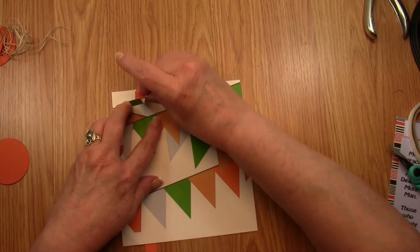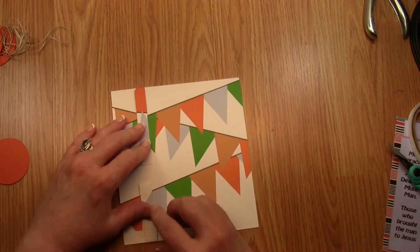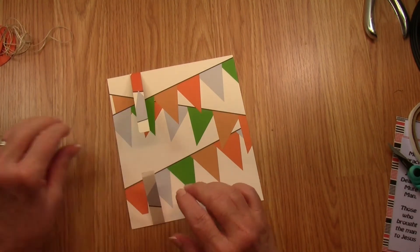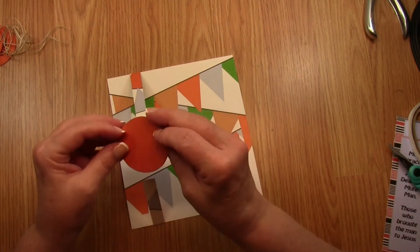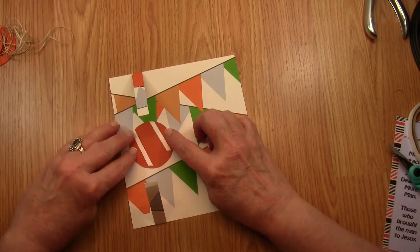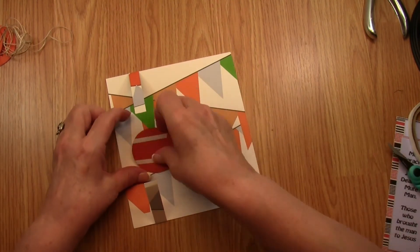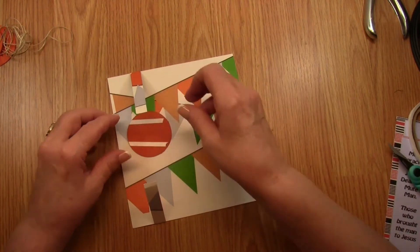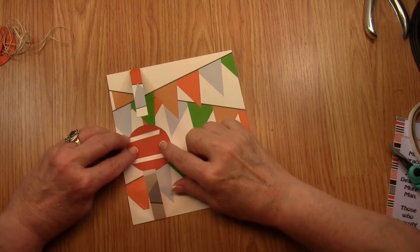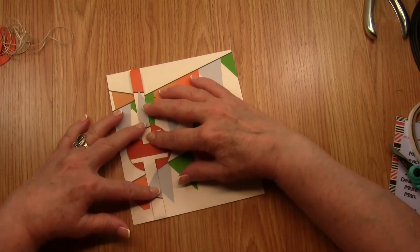We're going to fold both ends toward the center. Now we're going to take our blank label and we're going to place it with the tape up facing up, which the blank label will be to the back. We're going to remove the glue and we're going to attach our strip to our base circle.